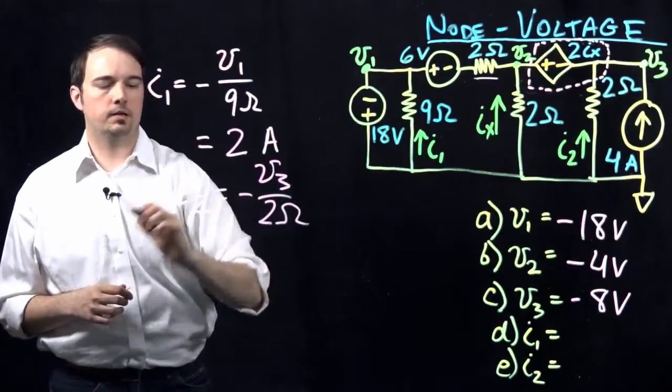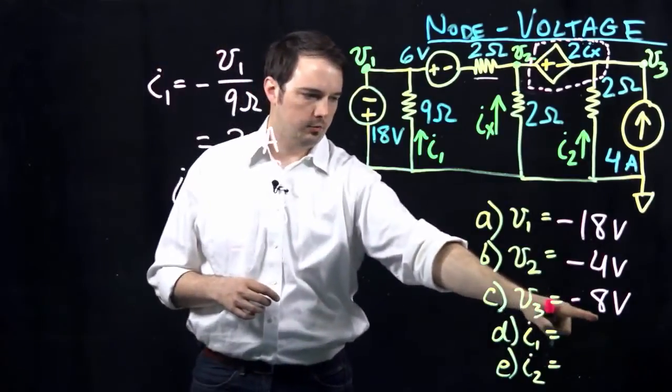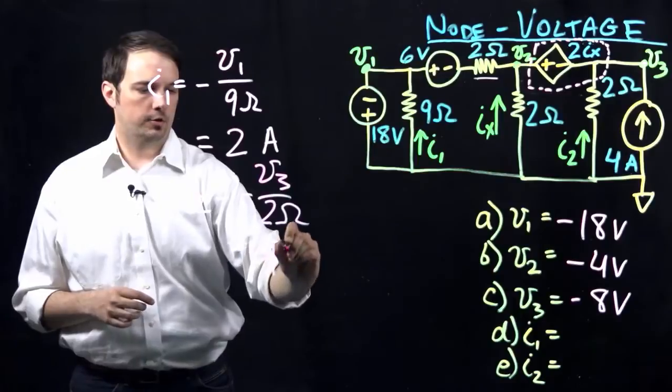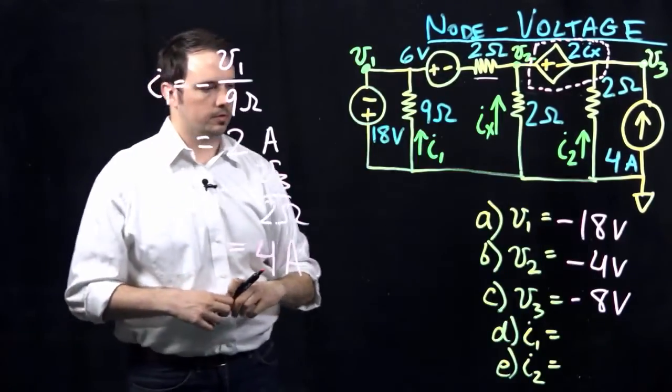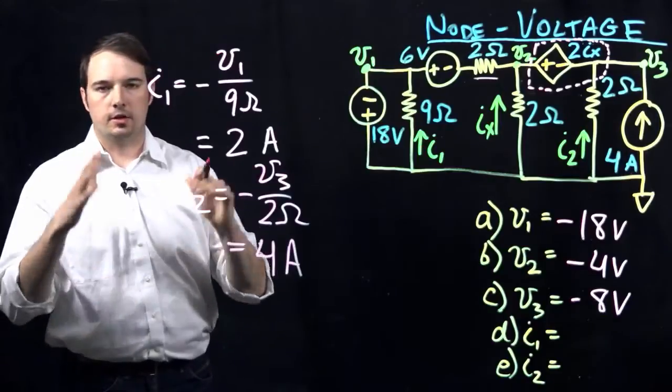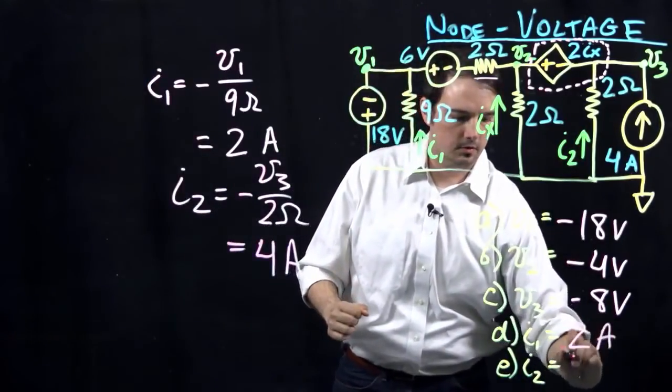And again, same thing, that should be a negative quantity. Substituting in what I already have for V3 right here would give me a value of 4 amps. So this now tells us, gives us all the solutions here, let's plug in this 2 amps here, 4 amps there.